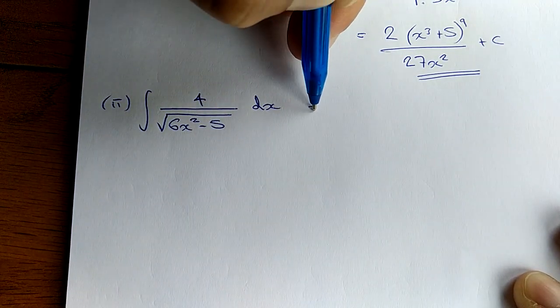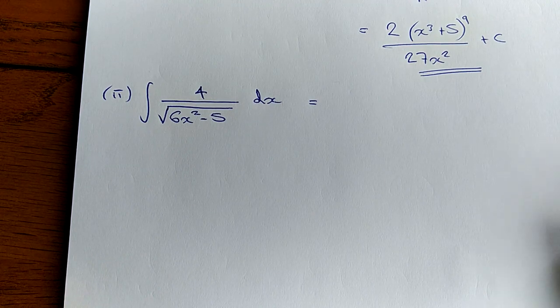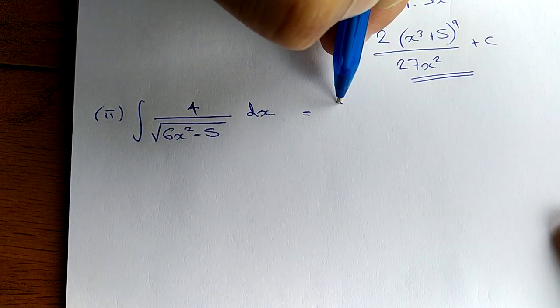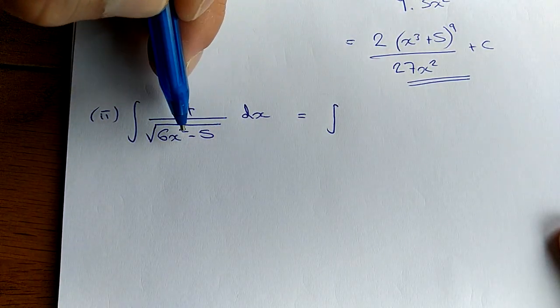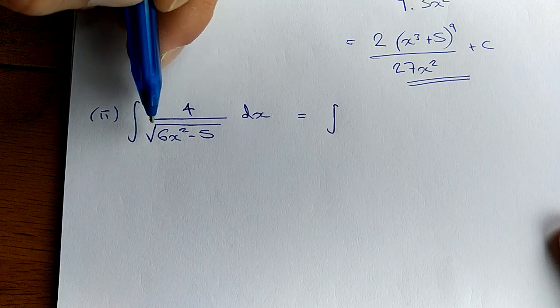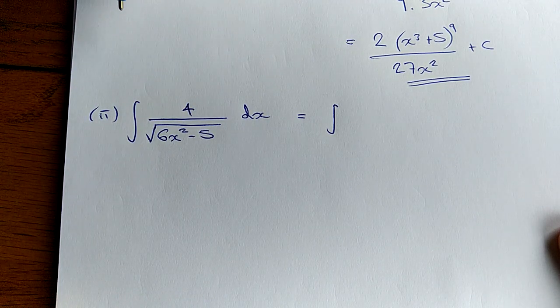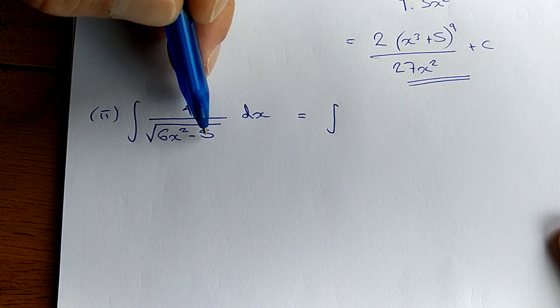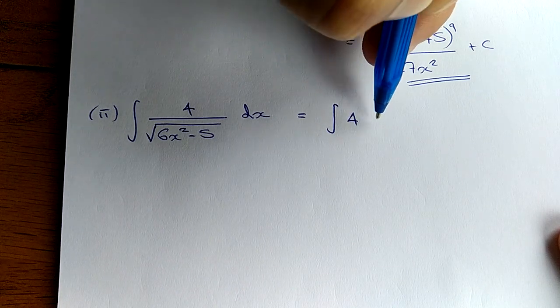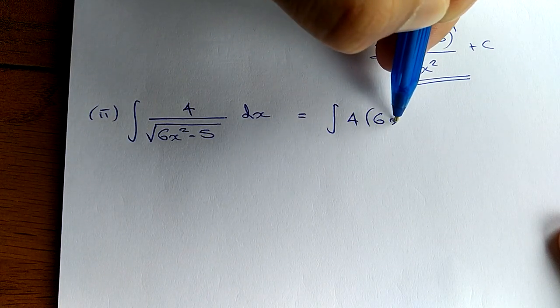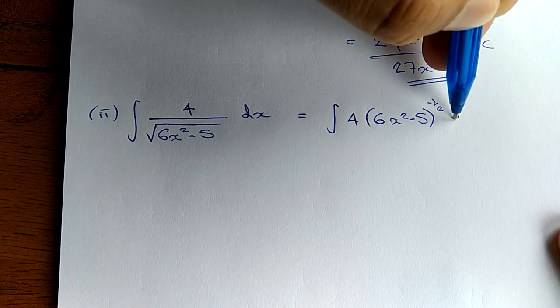So currently this is not in a differentiable form. What we need to do is step one: rewrite it so we can differentiate it. This entire thing is to the power of a half. If you remember from fifth math, the square root can be rewritten as a power of a half. So power of a half, bring it up to the top, it becomes a power of a negative half. So it will be 4 bracket 6x squared minus 5 to the negative a half dx.